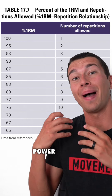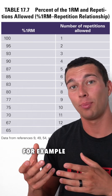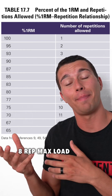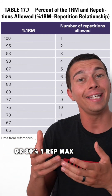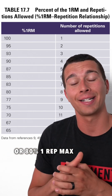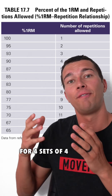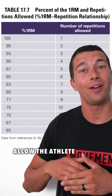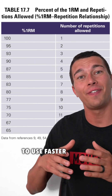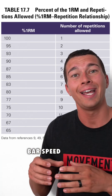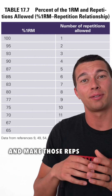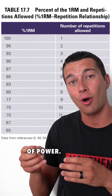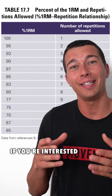But if we're programming for power, we can use closer to an eight rep max load, or 80 percent one rep max, for four sets of four. That would allow the athlete to use faster bar speed and make those reps more specific to the adaptation of power.